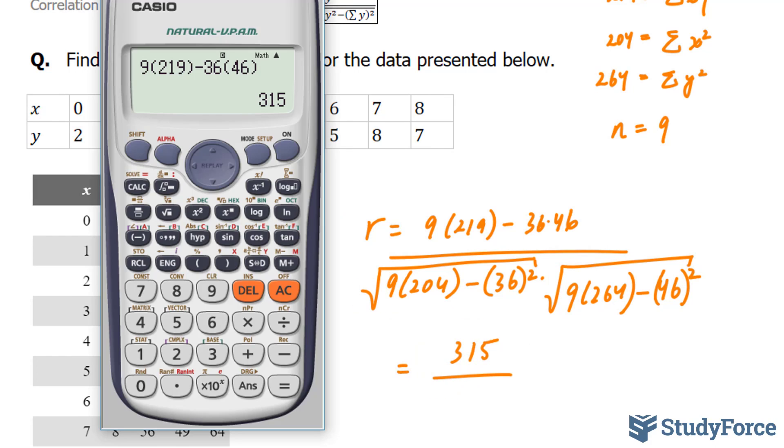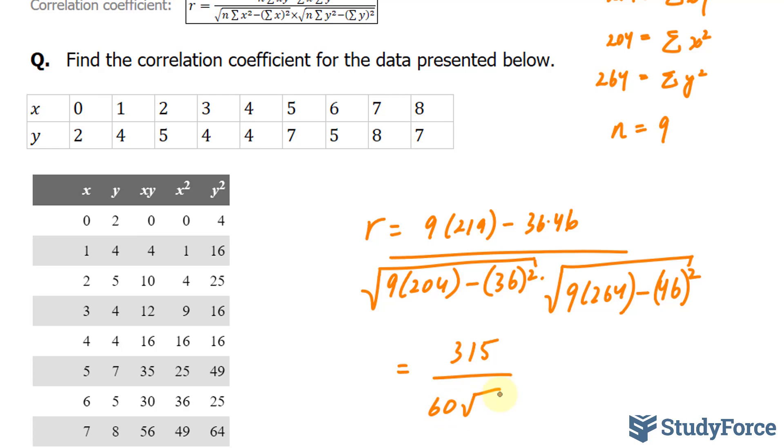And the denominator part, we start off by clicking the square root button. 9 times 204, minus 36 squared, times the square root of 9 times 264, minus 46 squared. So 60 times the square root of 39.